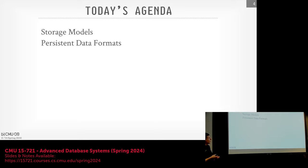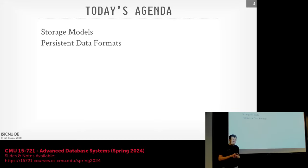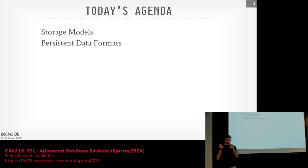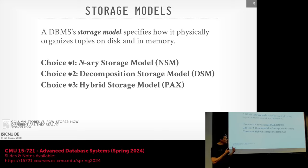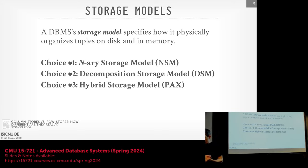Today we're going to talk about storage models and then persistent data formats. We won't talk much about intermediate data formats — we'll talk a little bit about Arrow today but cover that in more detail when we talk about query processing. Really, these are the files that are on disk — whether it's an object store or a local file system, these are the actual bits getting put out in persistent storage. The first thing we've got to discuss is what storage model we're going to use for these data files. This will be somewhat a repeat of what we talked about in the intro class, but it's important to go over in more detail to understand what PAX is going to do for us when we start constructing the file formats.